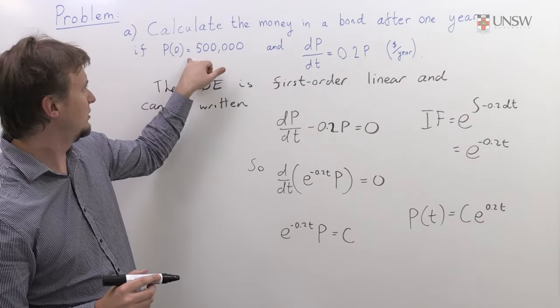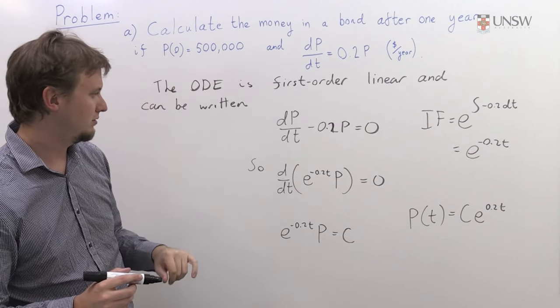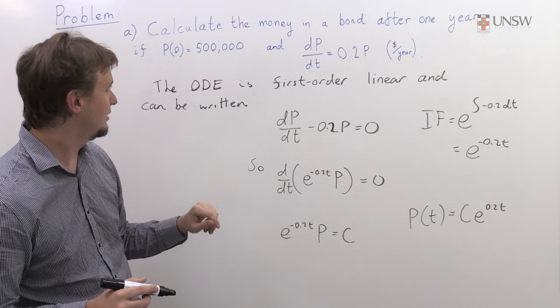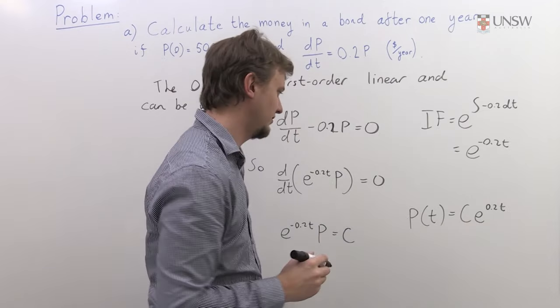Now we do have this initial condition here, that we start with half a million dollars in this bond. So if we plug in T equals 0, we'll get an equation that will tell us that constant C.